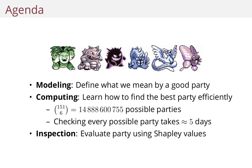We're going to split this presentation in three parts. We're going to talk about modeling — define what we mean by a good party. We're going to talk about computation — how do we find the best party efficiently given that we have a model and a problem that we want to solve. This is not trivial because if you look at the number of combinations, you have 151 Pokemon and you want to select five. There are almost 15 billion possible parties and checking every possible party would take around five days on my computer, so we want to be a bit smarter. We're going to get that time down to half a second.